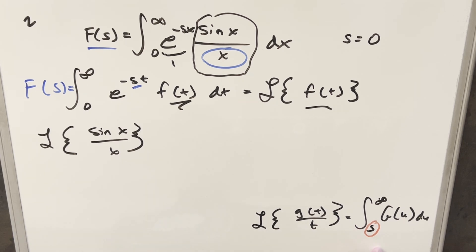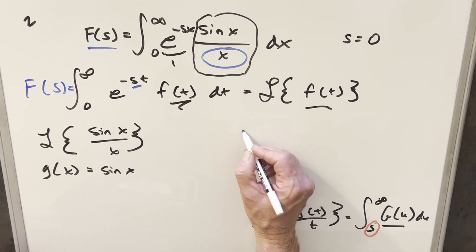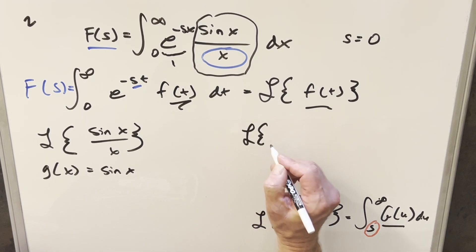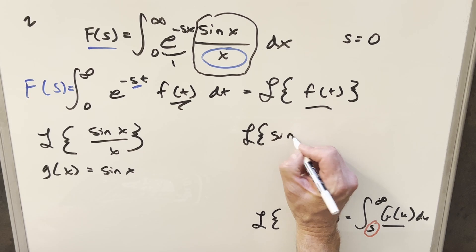And so using this formula here, we notice our problem is in this form, just x instead of t. So to try to make this clear, this numerator value, this g of x, that's just going to be sine x. So in order to find this big g of u value, what we need actually is the Laplace transform of just this g of x or just sine of x.